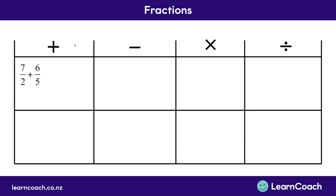In addition, we have to use a technique called the upside-down picnic table. This is because it looks like an upside-down picnic table when you add the fractions. Each leg of the table and the top of this upside-down picnic table means you have to multiply the two things together. So in this example, we're going to have to multiply the two by the six up the top here, and we're going to have to multiply this five by the seven up the top here. That's the two legs of the picnic table.